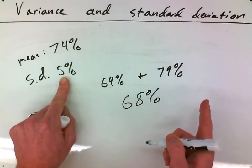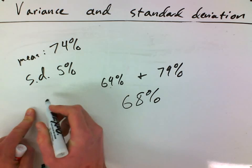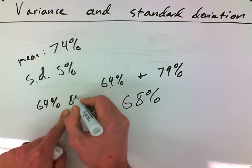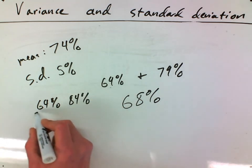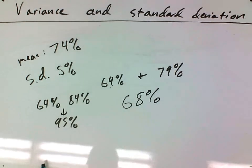If I go two standard deviations above and below, so that's 10 in each direction, that's a 64% to an 84%. I know that 95% of my students fall in that range.